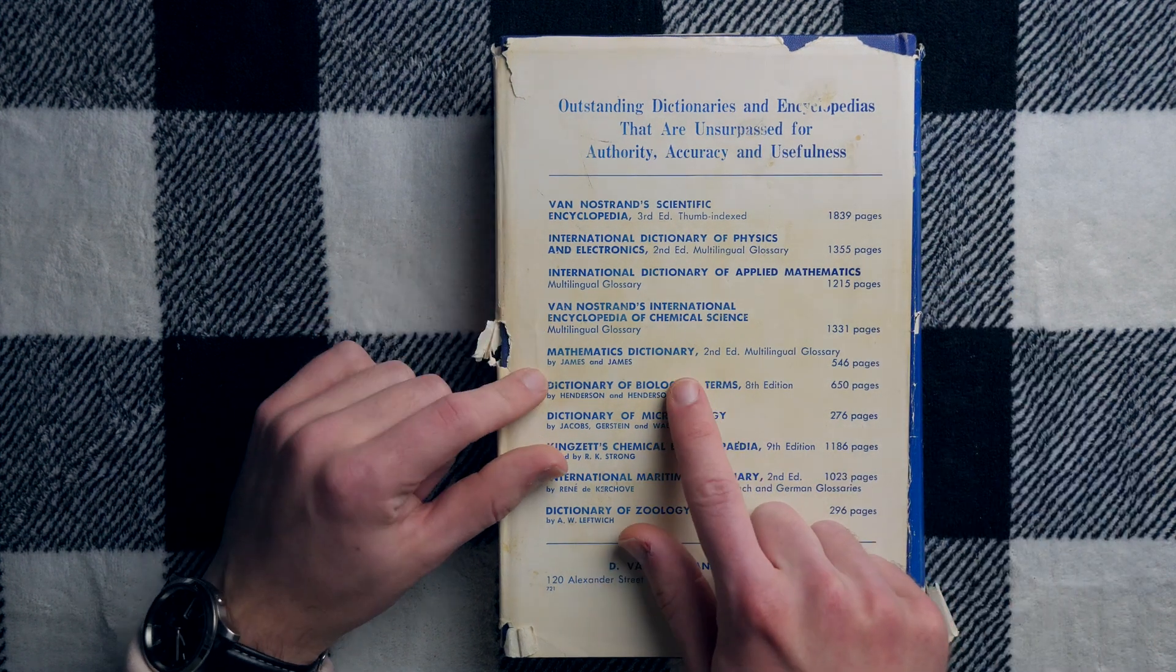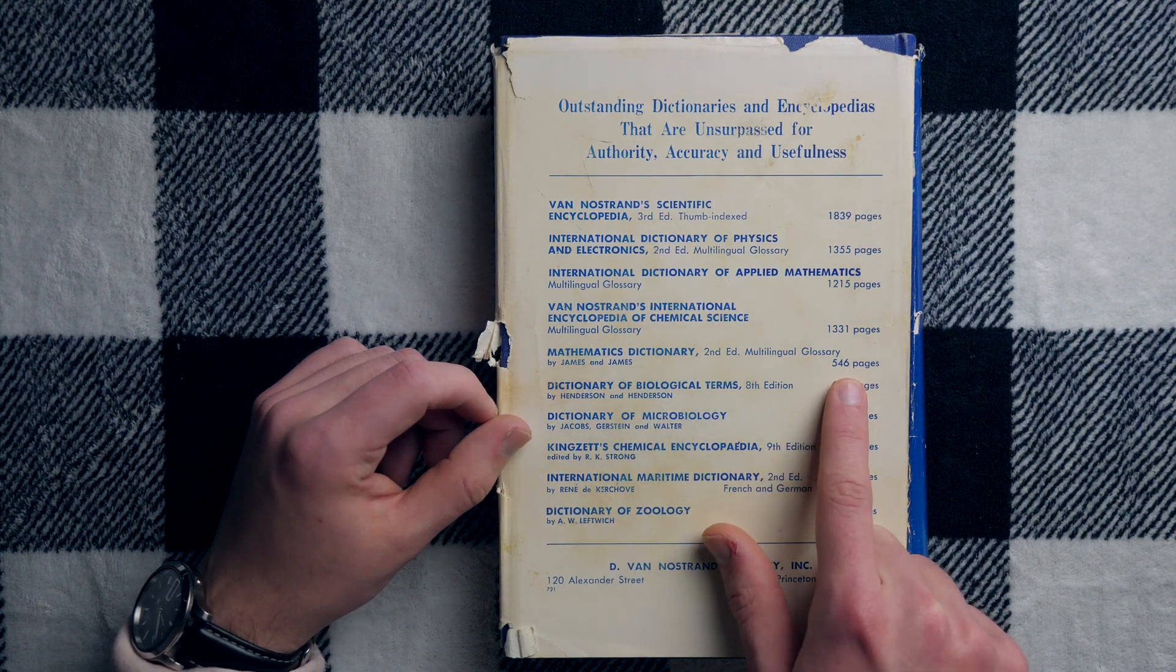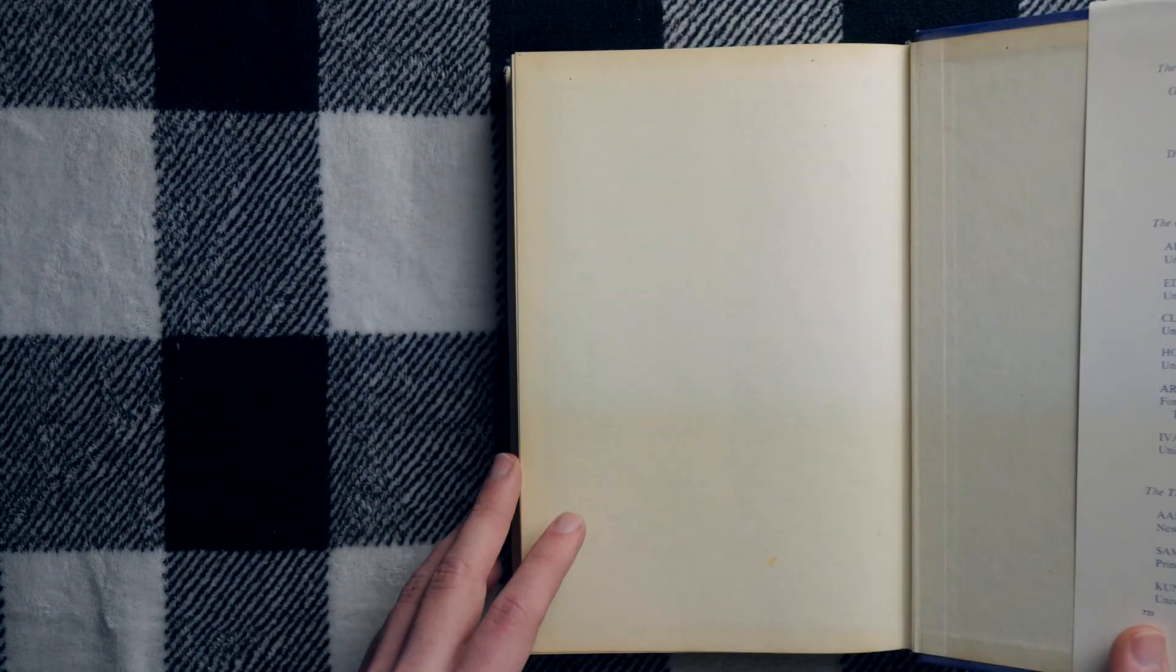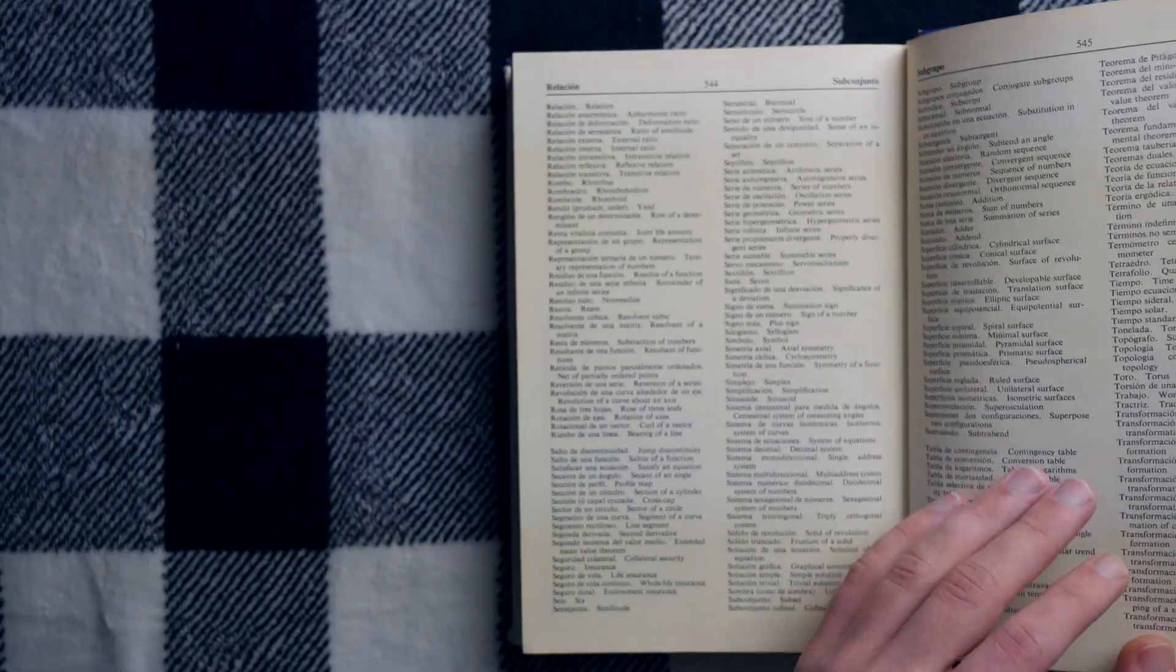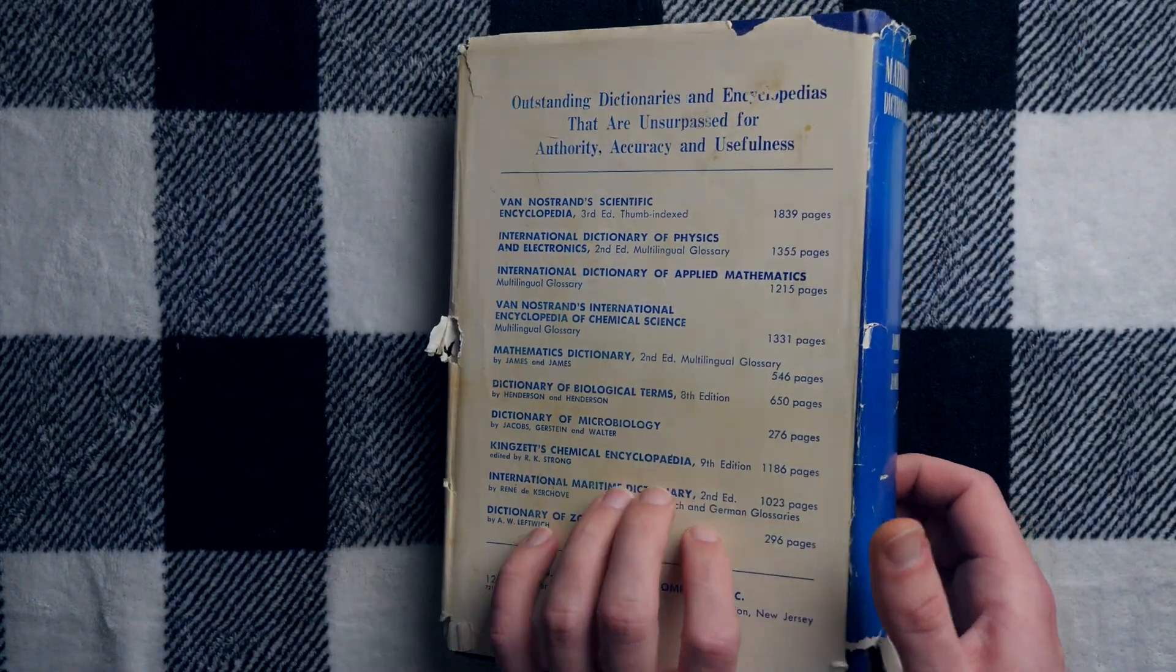I like that they have the page counts too. Kind of looks like I'm looking at the statistics of a boxer or something. A second edition of this mathematics dictionary, 546 pages. Maybe that's just this book. That's probably what it is. How many pages do we have in this guy? Looks like 546, yeah. So this is probably the second edition, I'm guessing.